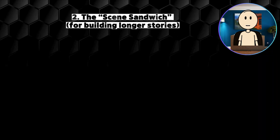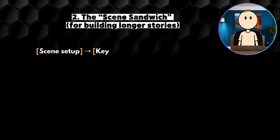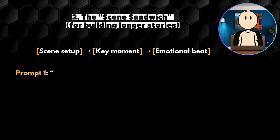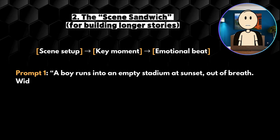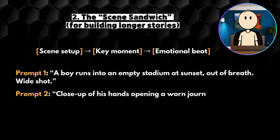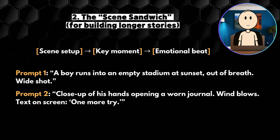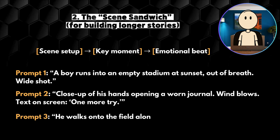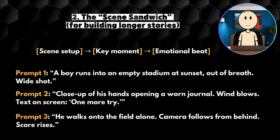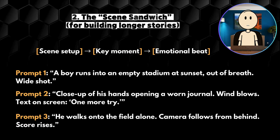The scene sandwich — for building longer stories. Think of this as: scene setup, key moment, emotional beat. Example across three prompts. Prompt one: a boy runs into an empty stadium at sunset, out of breath. Wide shot. Prompt two: close up of his hands opening a worn journal. Wind blows. Text on screen: 'One more try.' Prompt three: he walks onto the field alone. Camera follows from behind. Score rises. Why it works: you build a story rhythm through shots, not just words.